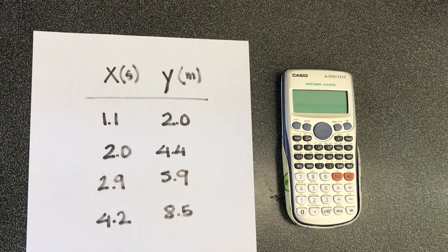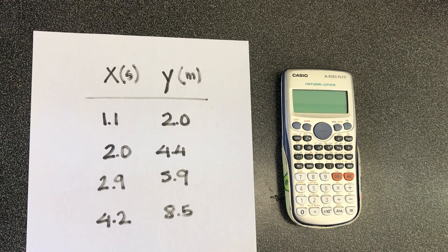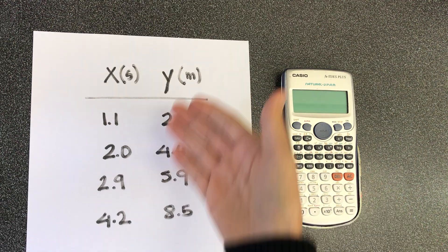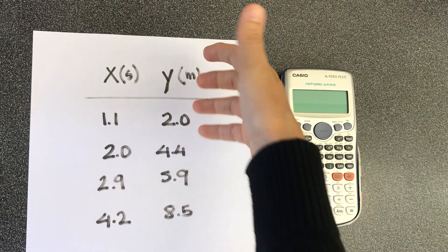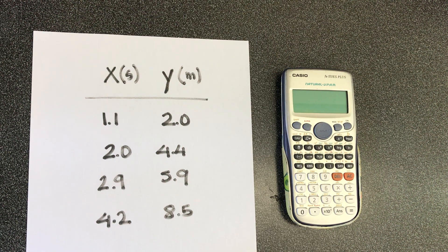Hello everyone, this is an example where you have the x-axis, the x values, the y values. The x is in seconds, so definitely it's a time. The y is in meters, so it looks like it's a certain distance.